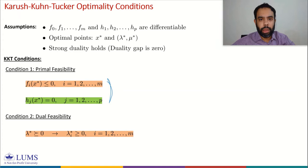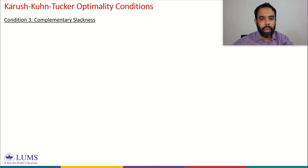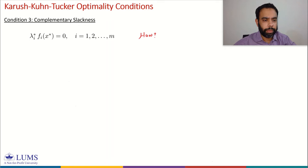Let's talk about condition 3, which we call complementary slackness. Let me define this condition first and then we will derive it. This condition states that lambda_i star · F_i(X star) = 0 for i = 1, 2, ..., M. Let us quickly derive this complementary slackness condition.